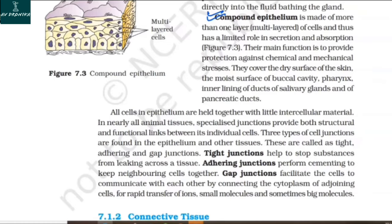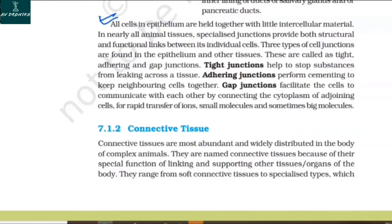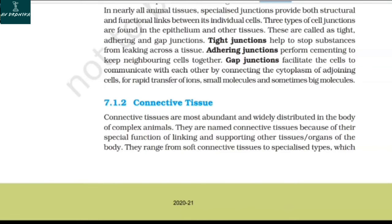All cells in epithelium are held together with little intercellular material. In nearly all animal tissues, specialized junctions provide both structural and functional links between individual cells. Three types of cell junctions are found in the epithelium and other tissues: tight, adhering, and gap junctions. Tight junctions help to stop substances from leaking across a tissue. Adhering junctions perform cementing to keep neighboring cells together. Gap junctions facilitate cells to communicate with each other by connecting the cytoplasm of adjoining cells for rapid transfer of ions, small molecules, and sometimes large molecules.